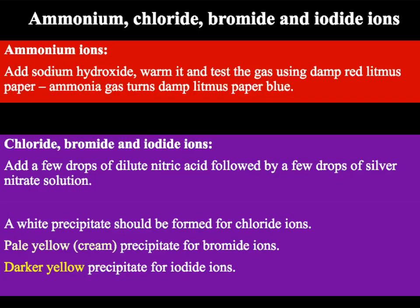We have already looked at the ammonium ions NH4+, which are cations. However, we also need to be aware of the test for the halides, which are chloride, bromide and iodide. In order to test for these, we add a few drops of dilute nitric acid in order to react with any other chemicals, followed by a few drops of silver nitrate solution. If we have chloride ions present, then we form a white precipitate. Bromide ions will go a pale yellow or cream colour, and finally the iodide ions will form a dark yellow precipitate. This is because we are making silver chloride, silver bromide and silver iodide.